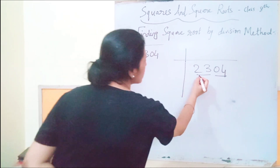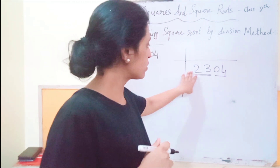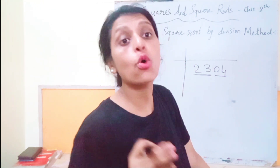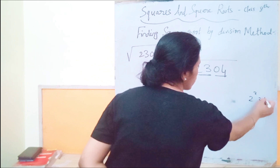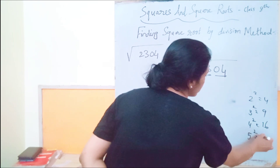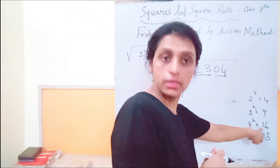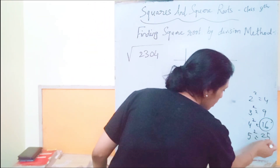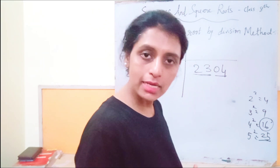Now we take the first paired up number, that is 23. We have to see what is the nearest perfect square to 23. Since 4² = 16 and 5² = 25, and 25 is bigger than 23, we take 16 as the nearest perfect square.